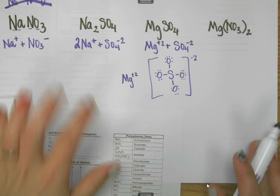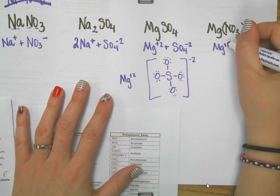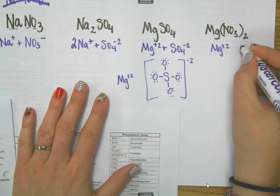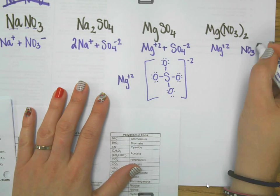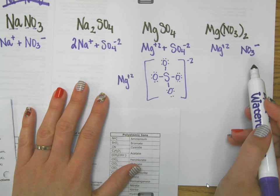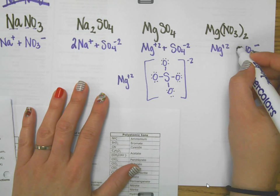My last one is magnesium nitrate. Magnesium, again, is a plus two. We've been using it for a while. But this time, my nitrate has parentheses around it. It doesn't change anything about nitrate. It's still NO3 negative, but what the parentheses mean is that I have two of those groups. The reason that we have to have the parentheses is that if I don't, it will be written like that.